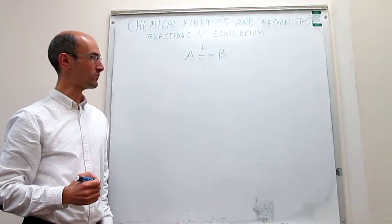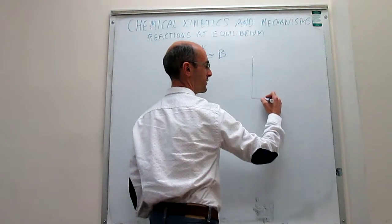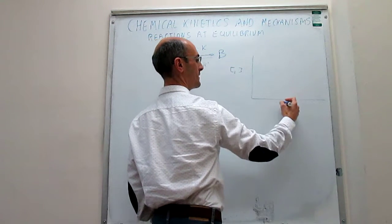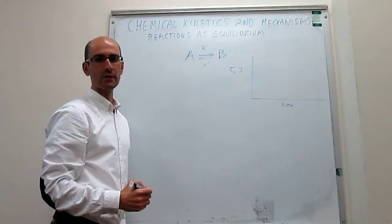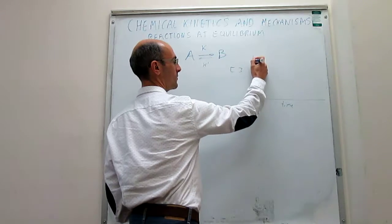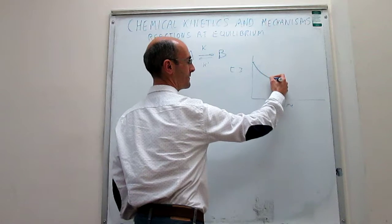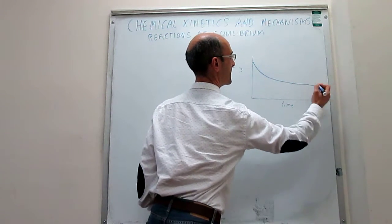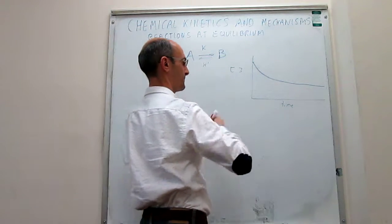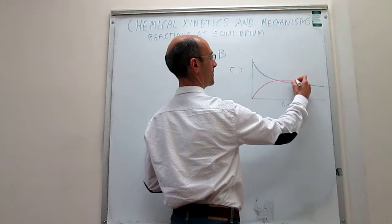One of the things we can do is map how the concentrations of A and B change as a function of time. Here we have the concentration of either A or B as a function of time. Let's assume that we start with no B and only reagent A. This would be our initial concentration of A, and the decay is something like this. For B, exactly the opposite happens — initially there's no B, and then after some time it grows.